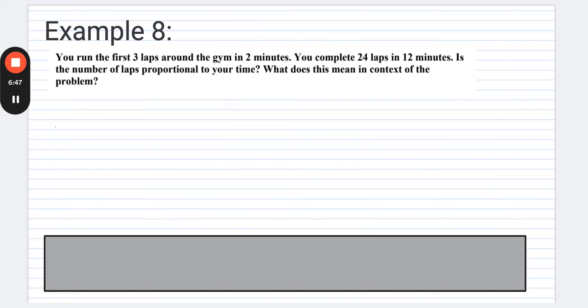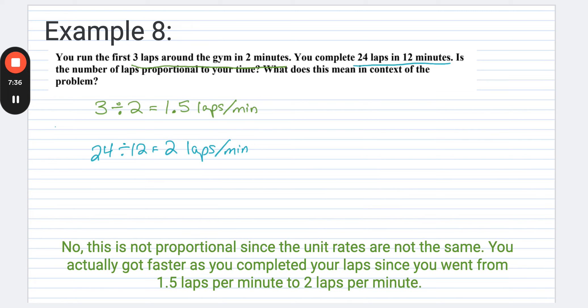Last example in this one, it says you run the first three laps around the gym in two minutes. You complete 24 laps in 12 minutes. Is the number of laps proportional to your time? And what does this mean in context of the problem? So we'll worry about the part two of that question in a moment. First, we just want to figure out, is this proportional? So if I take a look, okay, so we do three laps in two minutes. So I'm going to go ahead and do a unit rate. So I'm going to do three divided by two. And that is one and a half laps per minute. And then it says, when we're done, we actually completed 24 laps in 12 minutes. So if I do that 24 divided by 12, my pace was now actually two laps per minute. So if we look at these now, they're not the same, right? Those unit rates are not the same. So it's not a proportional relationship. And what does it mean in context of the problem? It means you actually got faster because you completed your laps from one and a half lap per minute to now two laps per minute. So you actually picked up the pace as you were running around the gym.